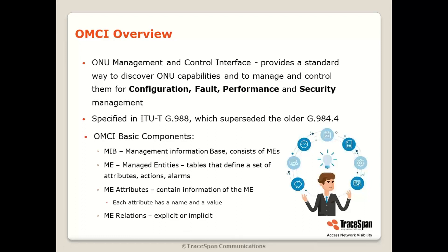The basic components of OMCI are, first of all, the MIB, the Management Information Base. This is what describes the configuration of the ONU, and it consists of MEs or managed entities. These managed entities are tables that define a set of attributes, actions, and alarms.